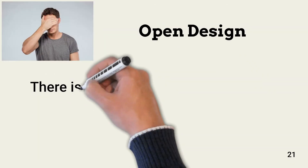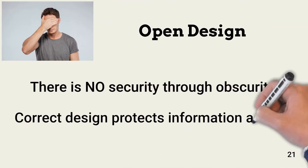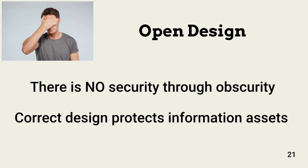The next principle is open design: never rely on security through obscurity. Hiding methods or data does not secure your resources. For example, we don't hide what encryption method we use; instead, we keep the key secret. For our infrastructure, we design proper segmentation and traffic control. We don't try to hide connected resources and hope attackers don't find them.